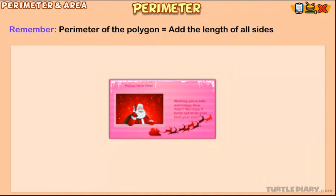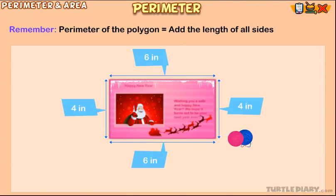You are making a card for your parents. You want to put yarn around the outside of the card. You measure the sides to find out how much yarn you need. The perimeter of the card equals 6 inches plus 4 inches plus 4 inches plus 6 inches equals 20 inches.